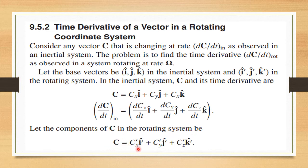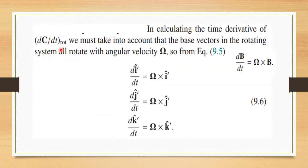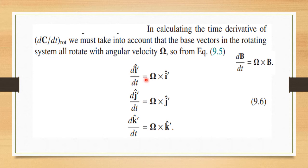In the rotating system c equals cx-dash i-dash plus cy-dash j-dash plus cz-dash k-dash. In calculating dc/dt in the rotating frame we need d(i-dash)/dt. Since the system itself is rotating, all basis vectors rotate at angular velocity omega. From our earlier result, d(i-dash)/dt equals omega cross i-dash, d(j-dash)/dt equals omega cross j-dash, and d(k-dash)/dt equals omega cross k-dash.